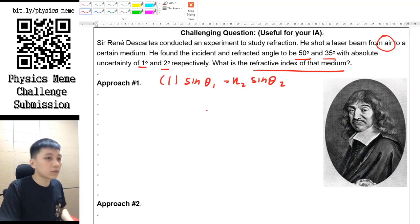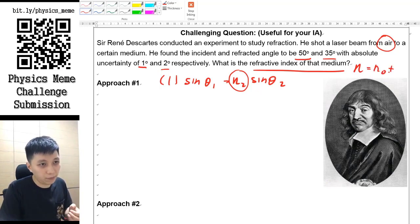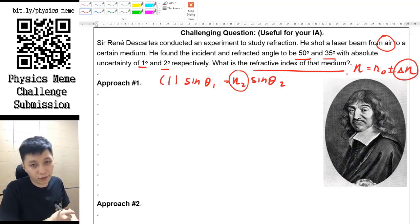However, the other thing is you are not just calculating the refractive index n₂ only, but you also have to evaluate its absolute uncertainty. So when you express it, it should be n = n₀ ± Δn. This is the most important thing that I would like you to find out.